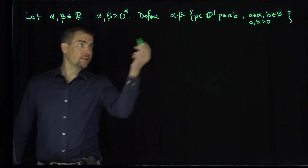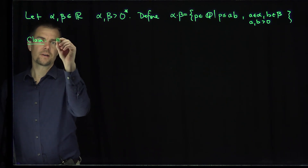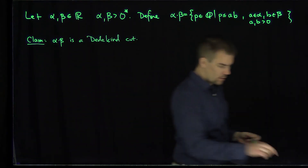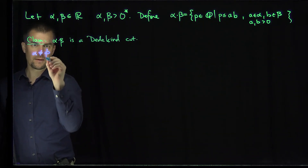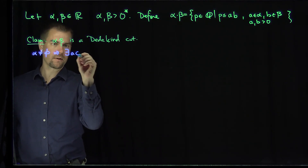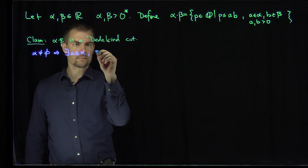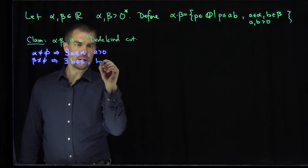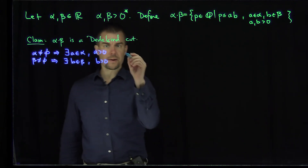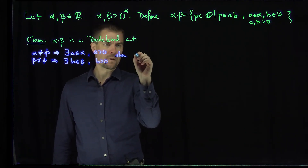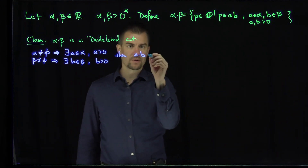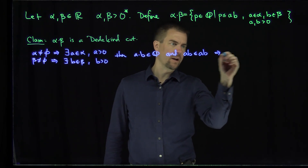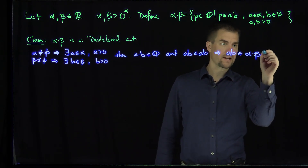We want to show that alpha dot beta is actually a Dedekind cut. The first claim is that since alpha is not empty, there exists an A in alpha with A greater than zero. Likewise, since beta is not empty, there exists some B in beta with B greater than zero. We can then form A times B, which is a rational number. Since AB is less than or equal to AB, that implies A times B is in alpha dot beta, and so alpha dot beta is not empty.